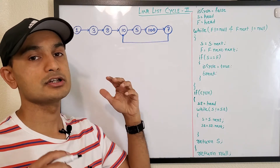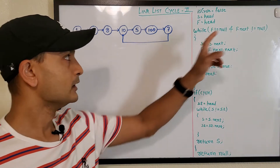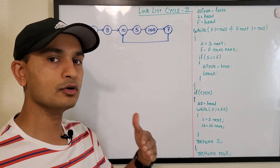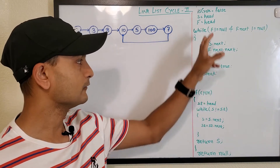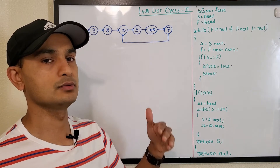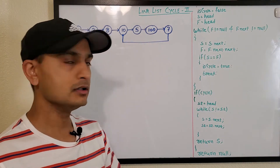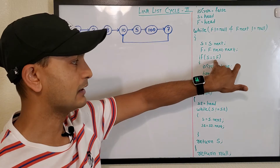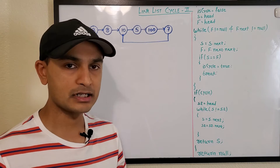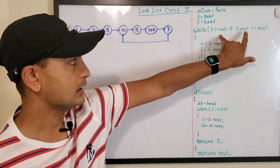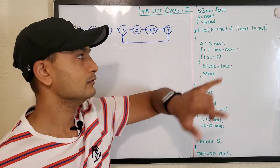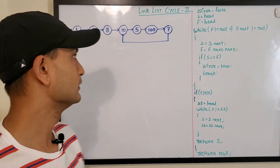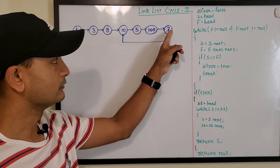We need to detect whether it has a cycle or not, and then return the node which starts the cycle. We start with two pointers, slow and fast. As the name suggests, slow will go to the next pointer by one step whereas fast will go to the next pointer by two steps. We terminate the loop when fast or fast.next is null, or when slow and fast have reached the same location.